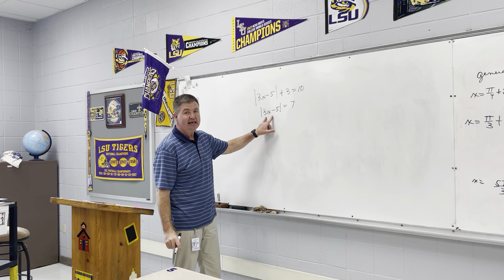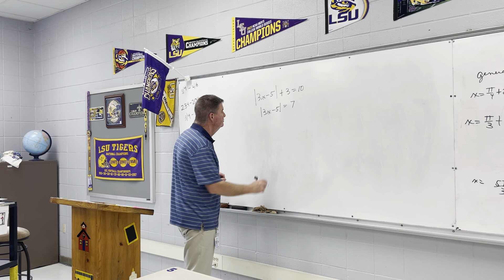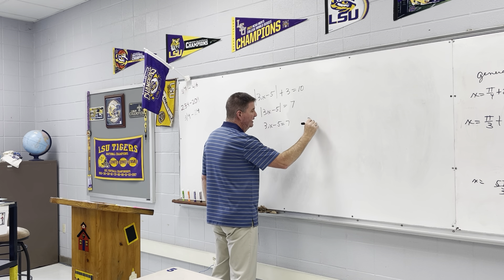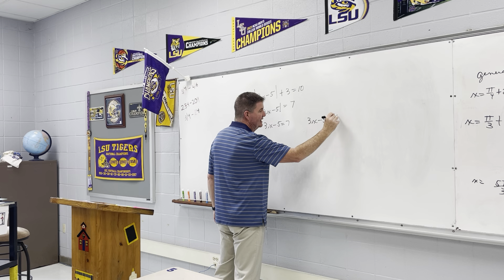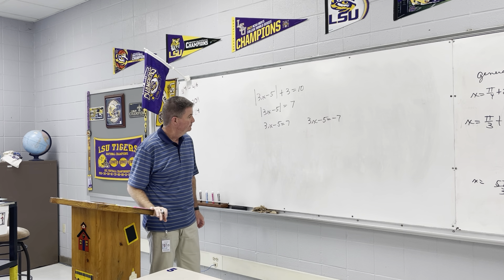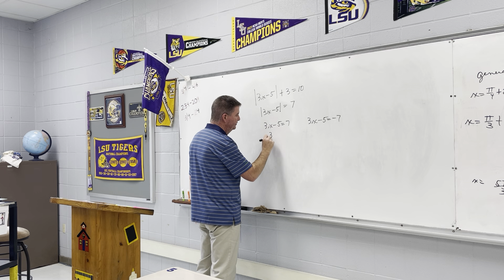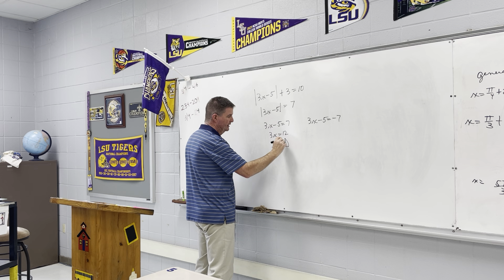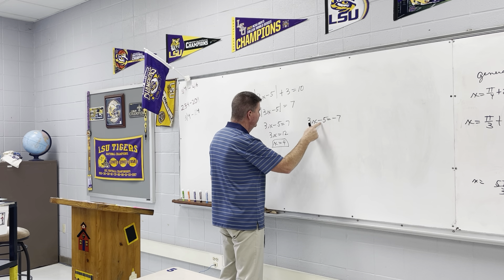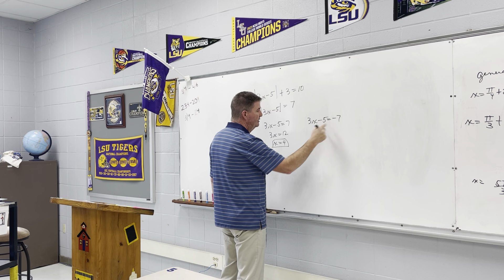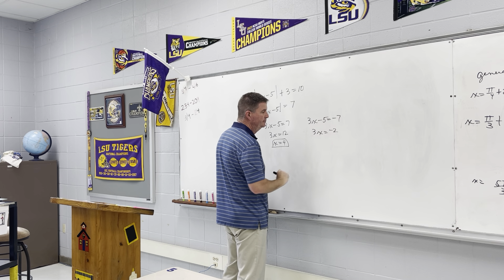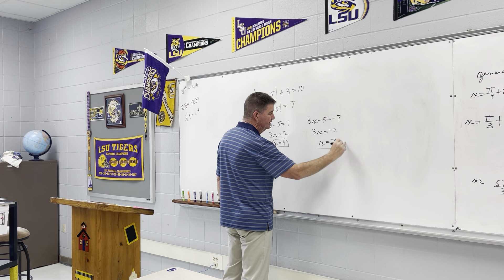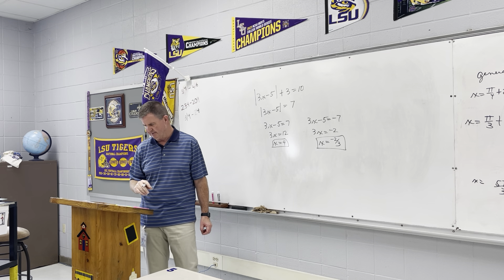Now that it's isolated, we do exactly what we did in the last problem. We drop the absolute values, write it exactly like we see it — 3x minus 5 equals 7 — and we write it as the opposite: 3x minus 5 equals negative 7. Solving: add 5, 3x equals 12, x equals 4. That's one answer. For the other: 3x equals negative 2, divide by 3, x equals negative 2 thirds. Those are our two answers.